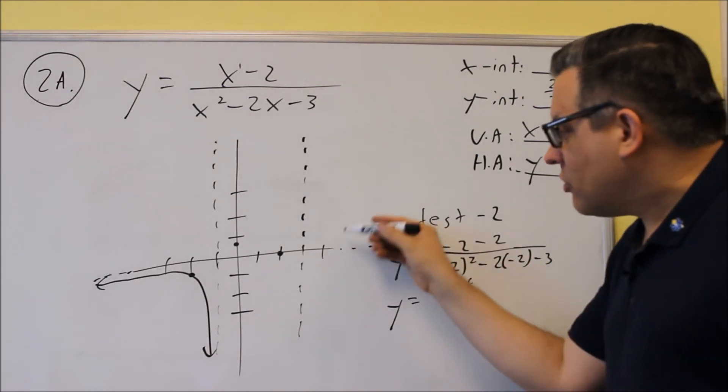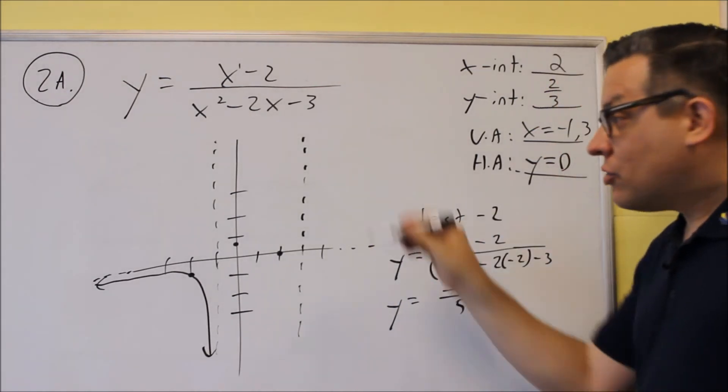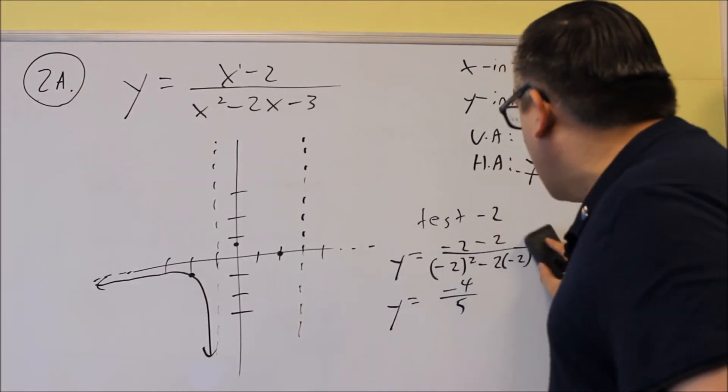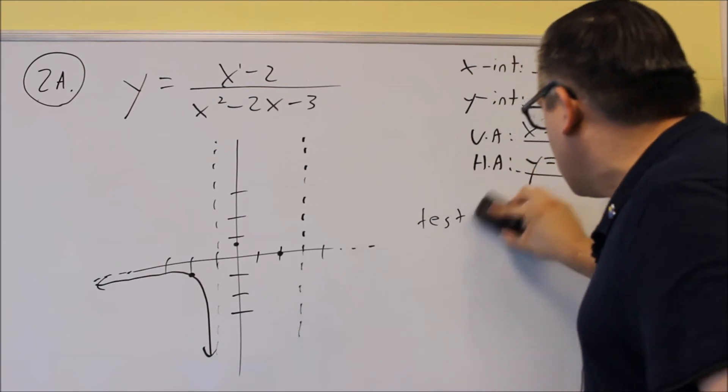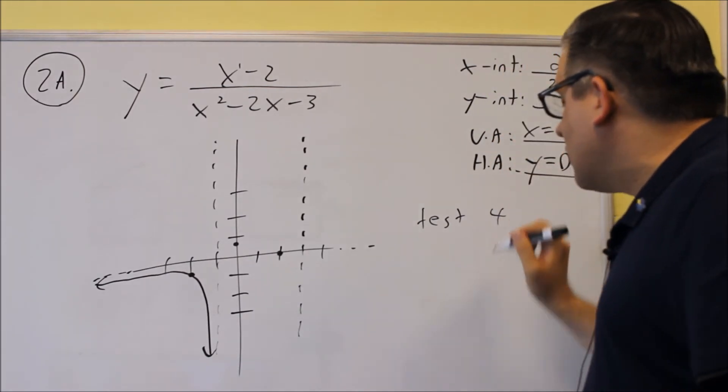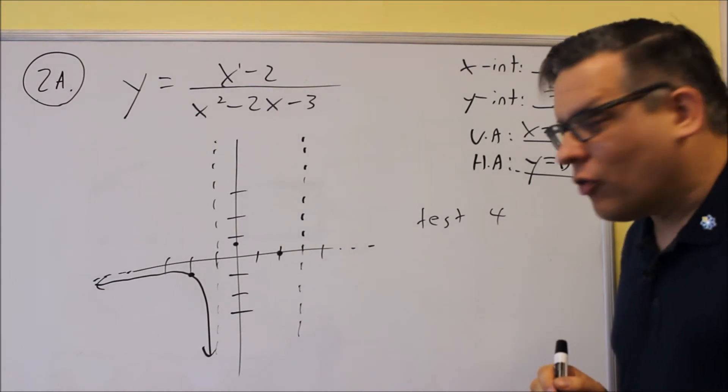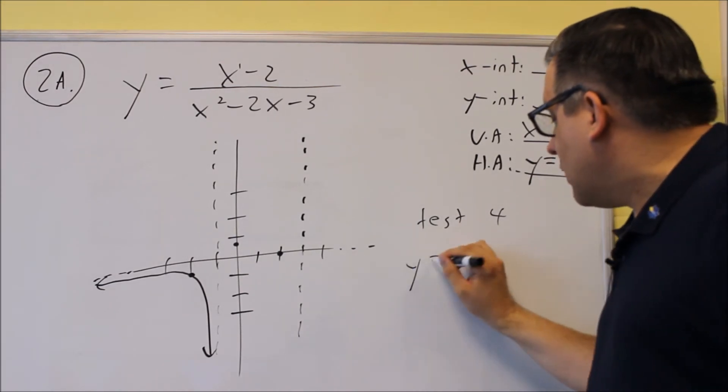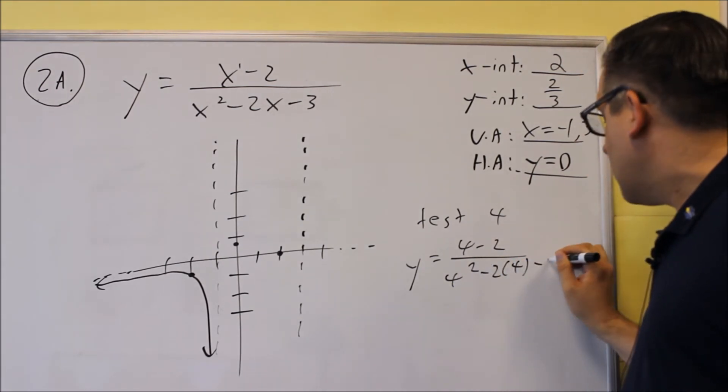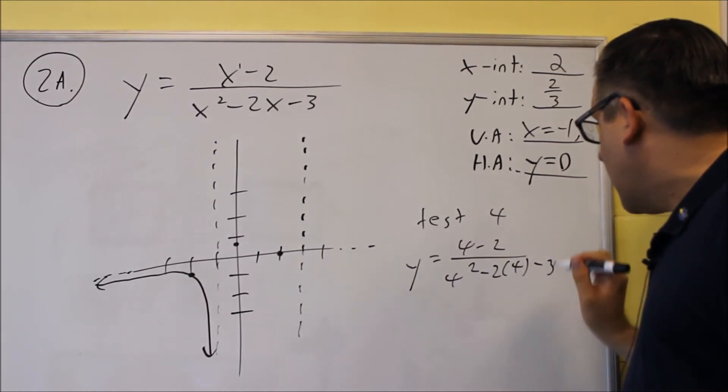So that would be the first test point. Now we do want to also do a test point to the right of the vertical asymptote. So this time we're going to test positive four, x equals positive four, and again we'll put that into our equation, four minus two over four squared minus two times four minus three. And by doing that, it's going to give us a two on top.